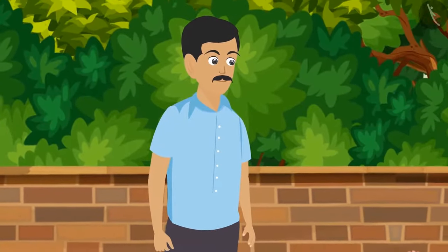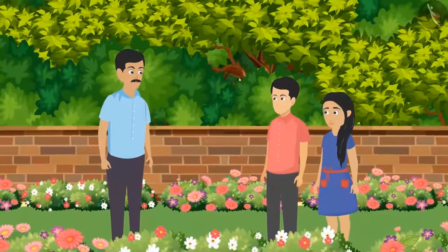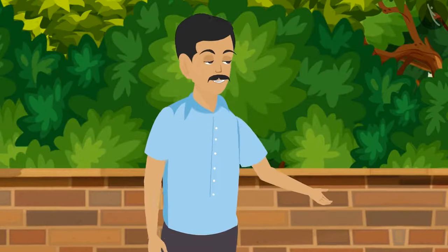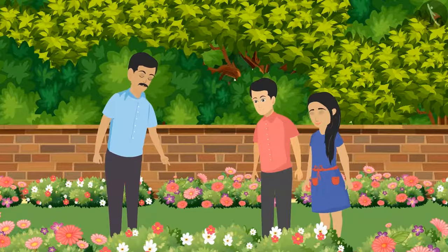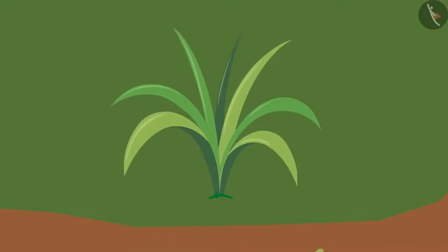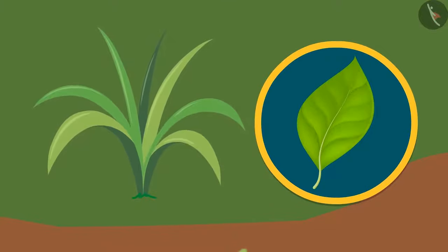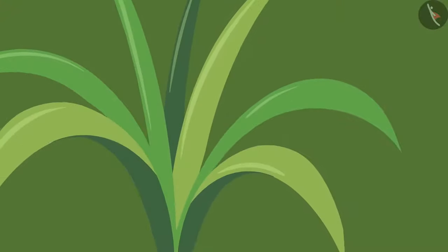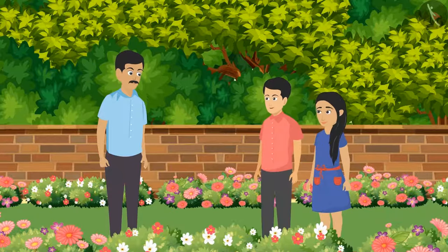Sundar uncle, who was listening from some distance, comes and helps them. He says: the way both of you think is wonderful. Let me also tell you something. Have a look at these grass leaves — these are different from other leaves. They are thin but longer, and their leaf venation is parallel. We had not thought of it at all, uncle. Do you know anything more interesting about it?